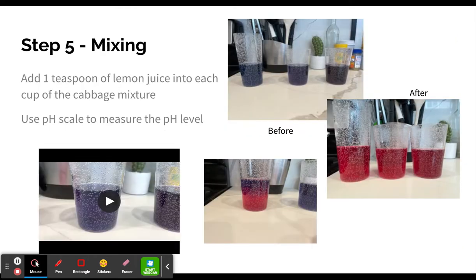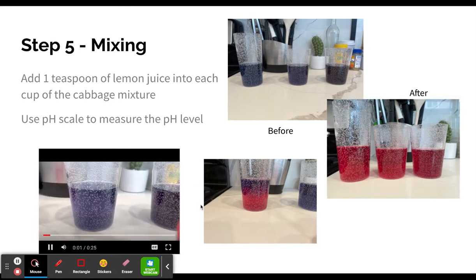Step five is to mix. So you are going to take your three cups, and then this is the before, and you're going to add one teaspoon of your lemon juice that you squeezed in step two to each of these cups with the cabbage mixture. So here's the before, here's the after. This is like a little in between when I had just poured in the lemon juice. And then here's a video on what should happen when you do this.